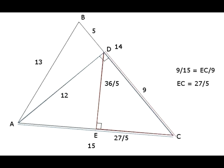From the same similarity, we can obtain the second proportion shown on the diagram. And from that proportion, we can determine the length of the segment EC. It equals 27 over 5.